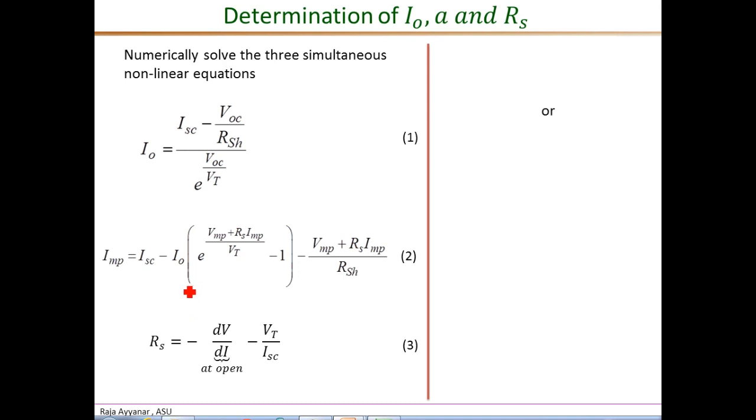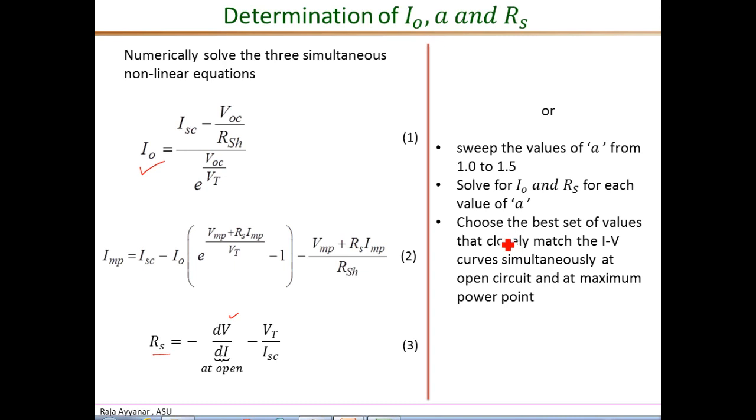The second approach is to use MathCAD or MATLAB, but not as a simultaneous nonlinear equation solver, but rather we actually sweep the values of A from 1 to 1.5 or 1 to 2. For each value of A, once A is known, or once we assume a value for A, then this is a closed form expression for I-O, because V-T is known, and all the other parameters are known, so I-O can be calculated. Similarly, here also, this is estimated. V-T is known once we know the value of A, so we can calculate Rs also. So for each value of A, solve for I-O and Rs, and you get multiple sets of I-O, A, and Rs. Among those, choose the best set of values that closely matches the IV curve at both the open circuit condition as well as at the maximum power point.